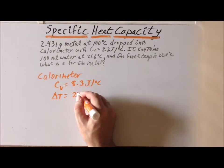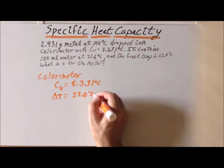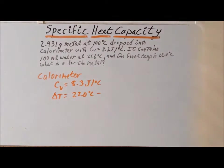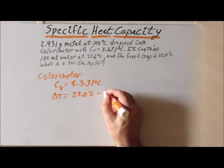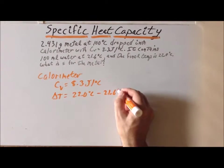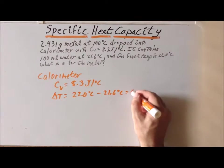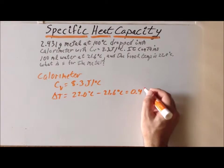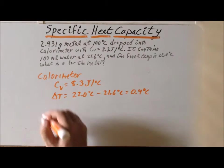So, it ends at 22.0 degrees centigrade. Because the calorimeter and the water are in equilibrium, 21.6 degrees centigrade was the initial. So, the change in temperature is 0.4 degrees centigrade.